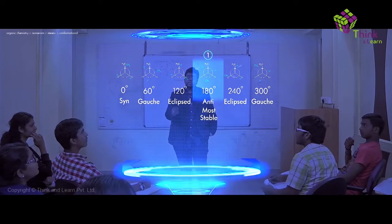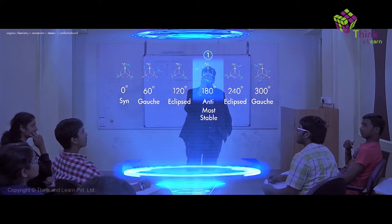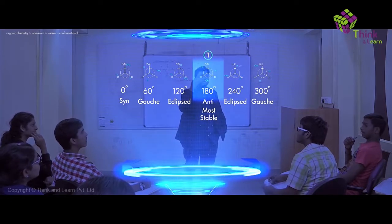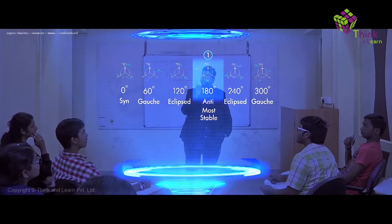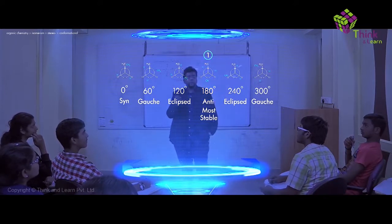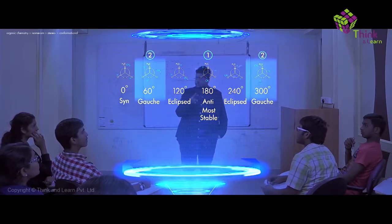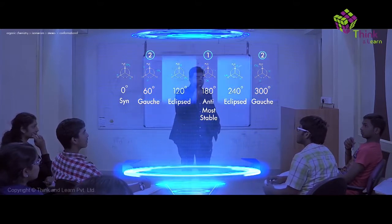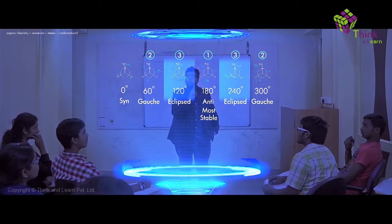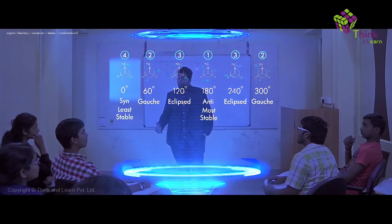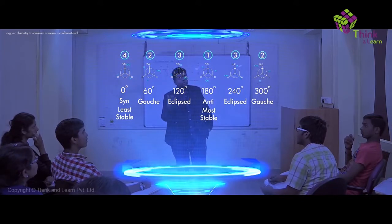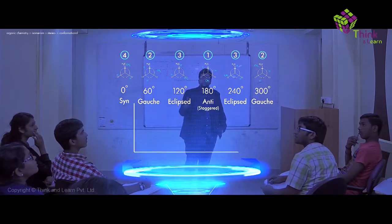The anti conformation is the most stable, because the dihedral angle is 180 degrees and the two CH3 groups are completely opposite each other. After anti, the gauche conformation is the next most stable. After gauche, the eclipsed conformation — not the fully eclipsed one — comes next, and finally the least stable is the syn conformation.